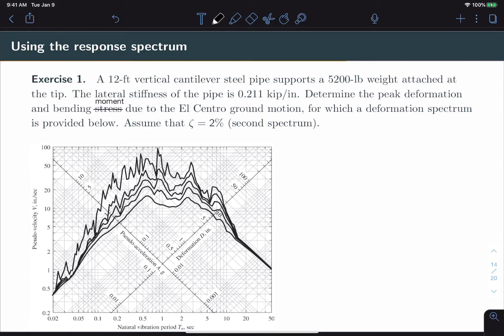So the structure of interest for us is a 12-foot vertical cantilever steel pipe supporting 5,200 pounds of weight at the top. And the lateral stiffness, calculated from the parameters of the steel pipe, is 0.211 kips per inch. We are asked to determine the peak deformation and bending moment due to the El Centro ground motion for which the spectrum has already been provided. And we are to assume that the damping is 2%.